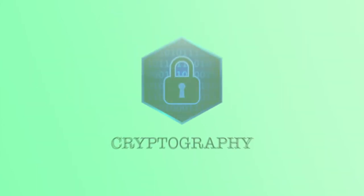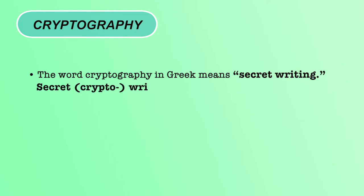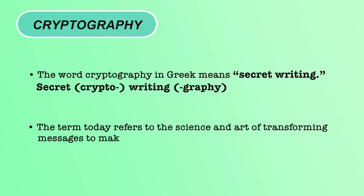The first section of this module is cryptography. Basically, cryptography is a combination of two Greek words: crypto, which means secret, and graphi, which means writing — that is, secret writing which cannot be understood by the attacker. In another term, it is an art and science of transforming messages from sender to receiver in order to make them secure and immune to attacks. Converting the original message to non-readable form and back again is collectively called cryptography.